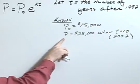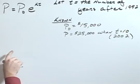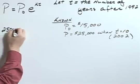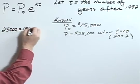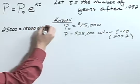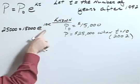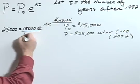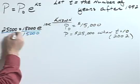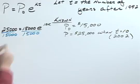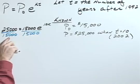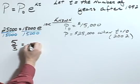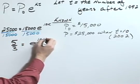We can use this information first to find our constant, our exponential growth constant. So we have 25,000 equals 15,000 e to the 10k. Solving for k, first divide both sides by 15,000. This left side will reduce to 5 thirds, so 5 thirds equals e to the 10k.